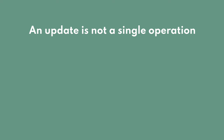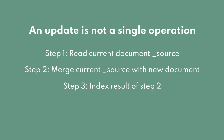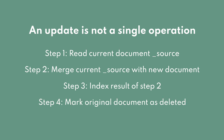One problem this can make very apparent is the performance of update operations. Updating documents in Elasticsearch using the update API can be an expensive operation, as it's actually a read, merge, index, and delete. A delete isn't an immediate delete either. The document is marked as deleted, but no space is freed up until Lucene, the shard holding the document, performs a merge.